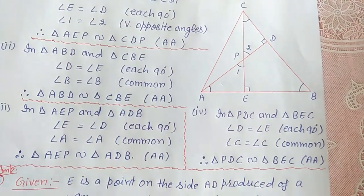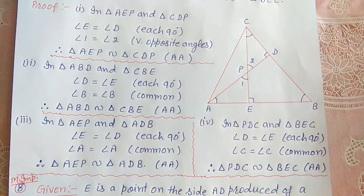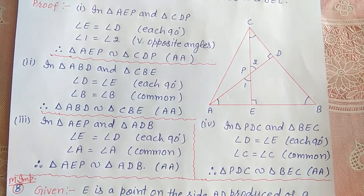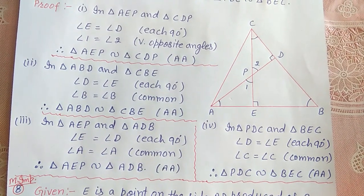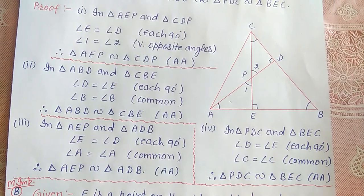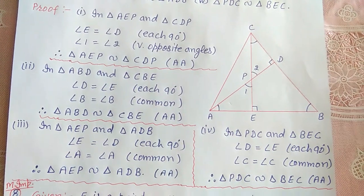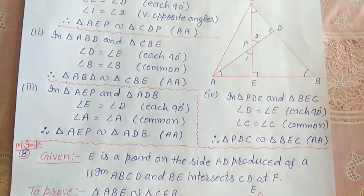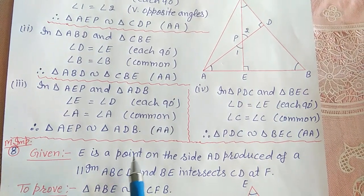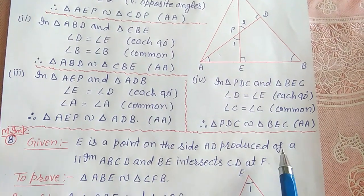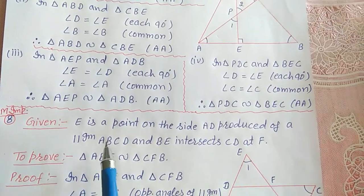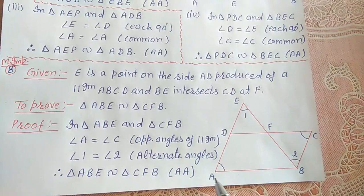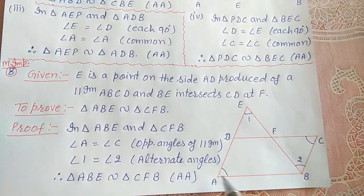Now question number 8. E is a point on side AD produced of a parallelogram ABCD and BE intersects CD at F. We have to prove that triangle ABE is similar to triangle CFB. Given: parallelogram ABCD.